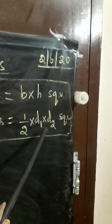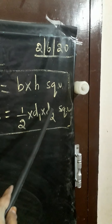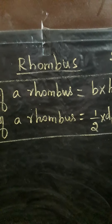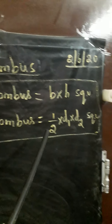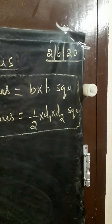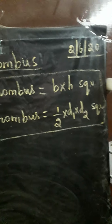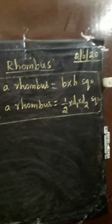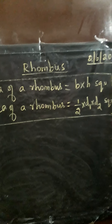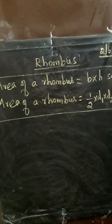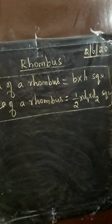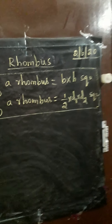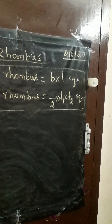Otherwise, if diagonals D1 and D2 are given in the rhombus, you find the area of the rhombus equal to half into D1 into D2 square units. So, area of rhombus equals B into H square units, or otherwise area of rhombus equals half into D1 into D2 square units.